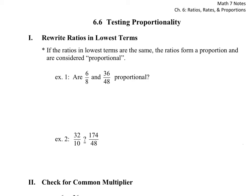For the first example using Method 1: I have 6/8. Since both are even, I divide by 2 to get 3/4. Now I check if the second fraction, 36/48, also reduces to 3/4. Dividing 36 by 6 gives 6, and 48 by 6 gives 8 — so that's 6/8. Dividing again by 2 gives 3/4. Both fractions reduce to 3/4.